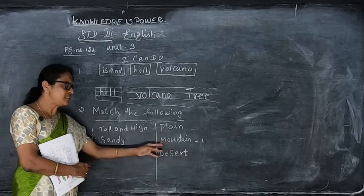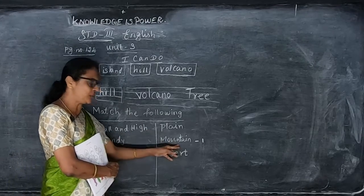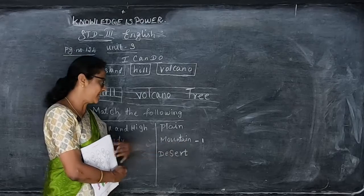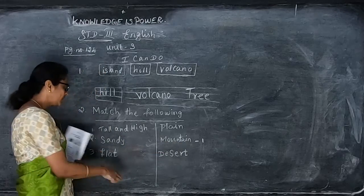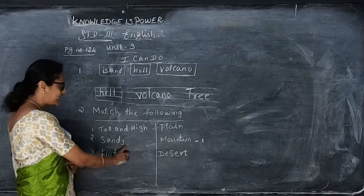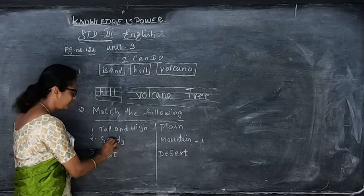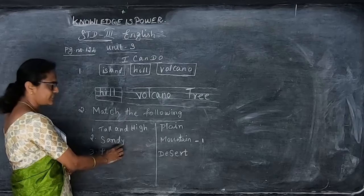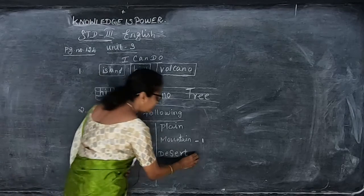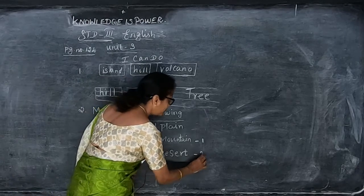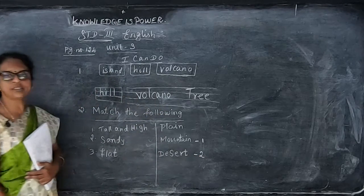The answer for tall and high is mountain — M-O-U-N-T-A-I-N. That is number one. Then sandy — S-A-N-D-Y. Sandy is the desert. So you can put number two: desert. What's the spelling? D-E-S-E-R-T.